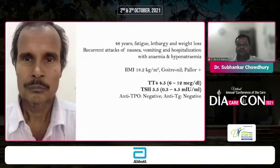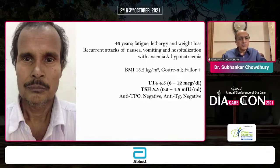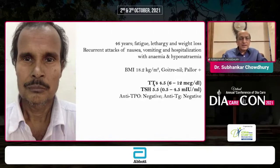This is a 46-year-old man who looks actually older than that, complained of fatigue, lethargy, and weight loss. He's been admitted a number of times with episodes of nausea and vomiting, and found to be anemic and hyponatremic. Each time he was put on saline and got better and discharged. He is non-obese, doesn't have a goiter, has pallor. His thyroid function test revealed a low total T4.